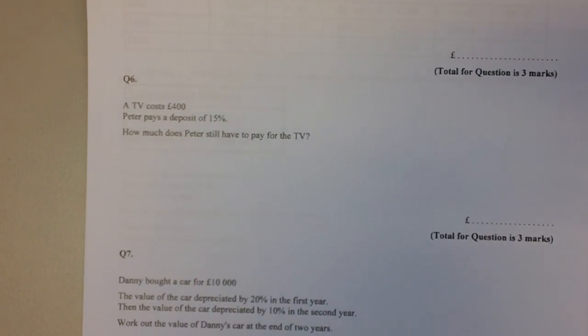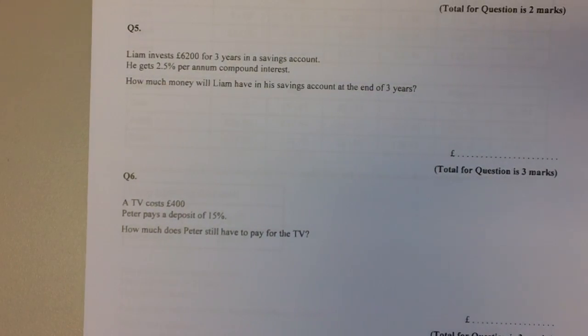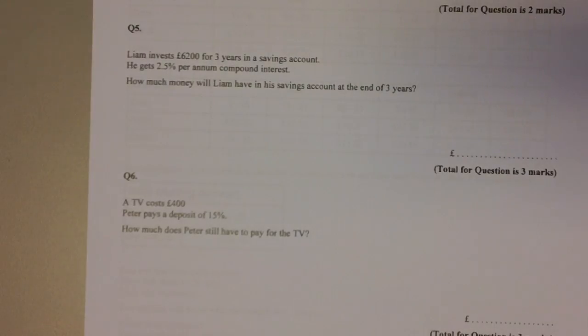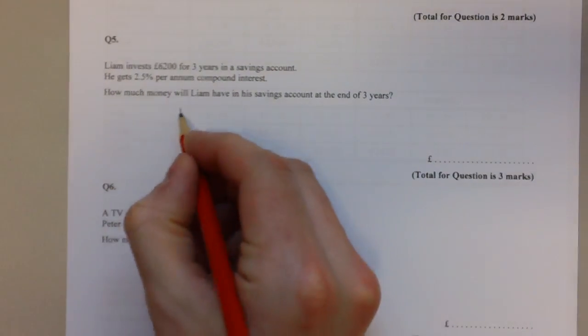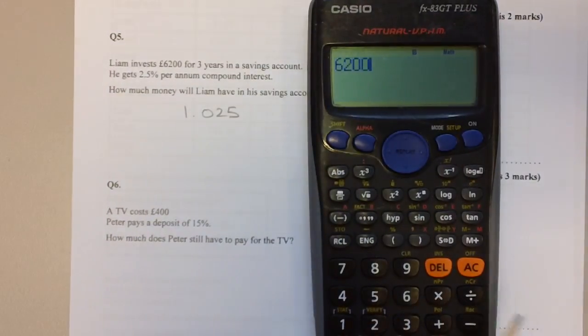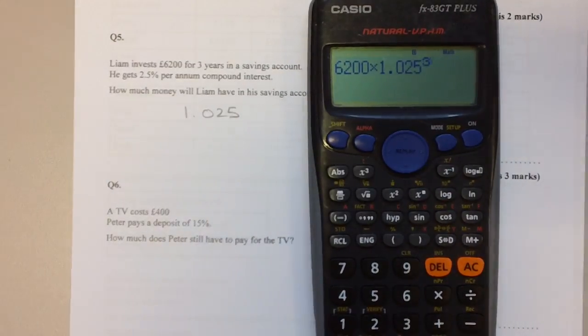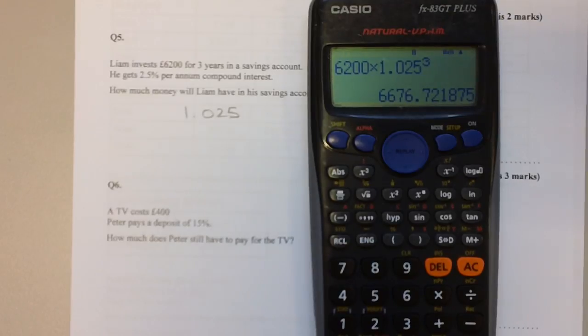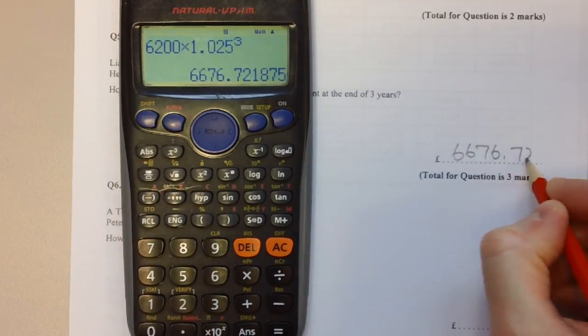Question number five: Liam invests £6,200 for three years in a savings account getting 2.5% compound interest per year. How much money will he have? This is a calculator question. We need to get a percentage multiplier from his interest rate - the percentage multiplier is 1.025. We multiply his initial investment by his percentage multiplier raised to the power three because he's investing for three years. The answer is an amount of money, so we need to round it to two decimal places. At the end of three years he's got £6,676.72.